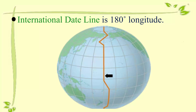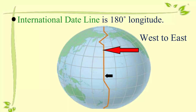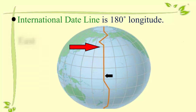This line is very important because when we cross it there is a change in the date. While crossing the international date line from west to east we gain a day, and while crossing from east to west we lose a day.